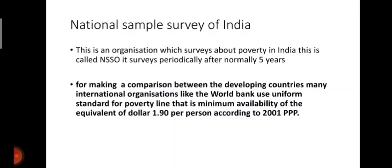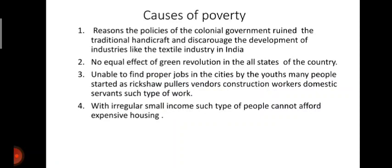East Asia and Pacific countries also decreased their poverty ratio. Now, the National Sample Survey of India — also called the NSO — is an organization that surveys poverty in India periodically, normally every five years. For making comparisons between developing countries, many international organizations like the World Bank use a uniform standard for the poverty line: minimum availability equivalent to $1.90 per person per day, according to 2011 PPP.